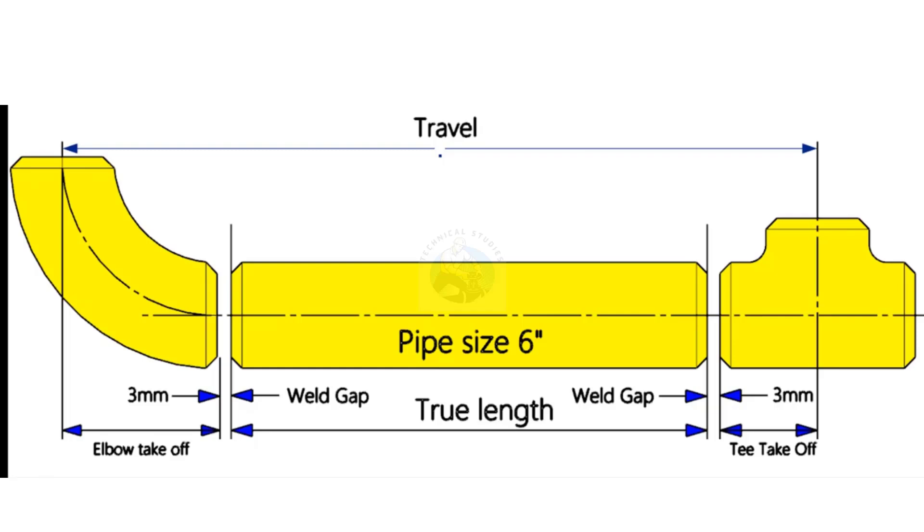Hi friends, how are you? In this tutorial, we will learn how to calculate the true length of a pipe between a 90 degree elbow and a tee. To calculate the true length of the pipe, we need to know three things.